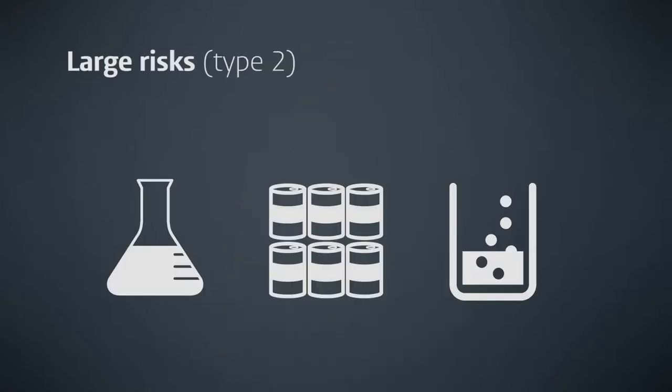On the other hand, the large risks or type 2 risks in the chemical industry are related to the industrial activities within chemical companies — that is, the use, storage, and processing of chemical substances.